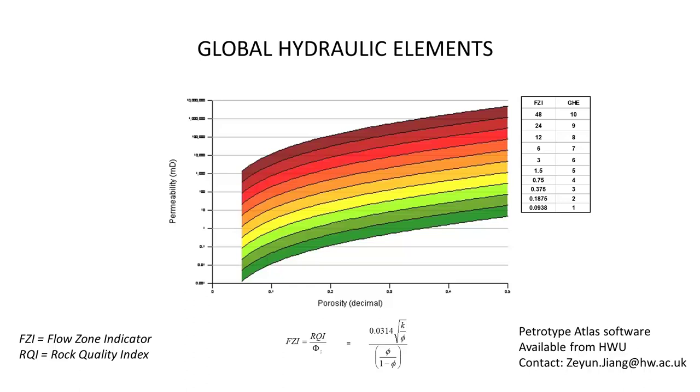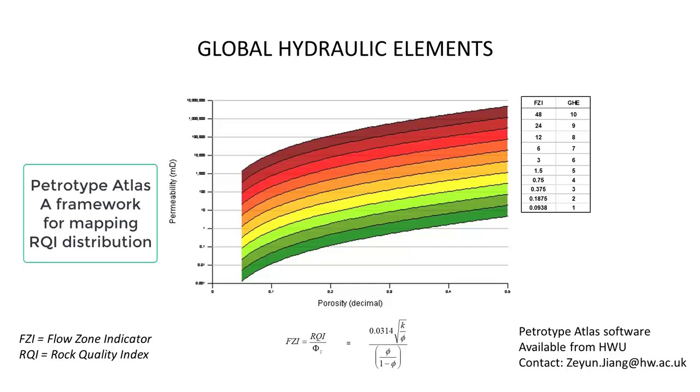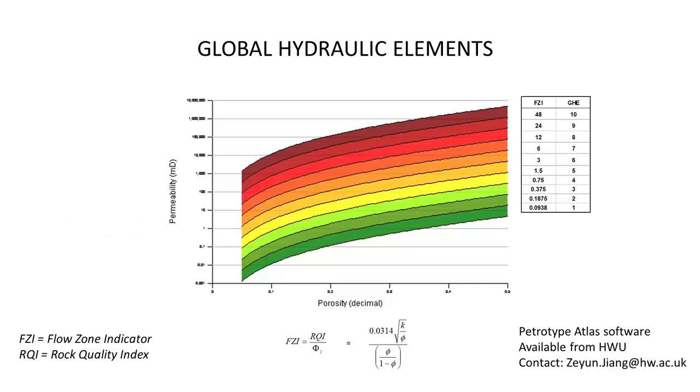So to illustrate simply how one might decide how many rock types there are within a reservoir, we introduced a template based on the Amaefule arrangement of the Kozeny-Carman equation. We looked at the equation which relates the flow zone indicator, which is a porosity-normalized rock quality index. The rock quality index is porosity and permeability - permeability divided by porosity square root of would be the rock quality index, and then you have a normalized porosity on the denominator there. So recognizing this, we just allocated in a logical series a number of FZI values where we allowed the FZI value to essentially double in a series.